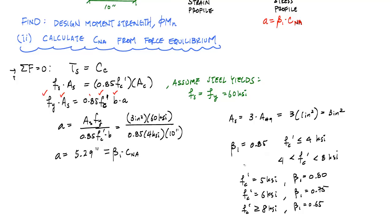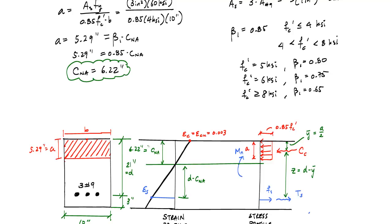Here in this case, beta one is 0.85 because I have 4 KSI concrete. A lot of times people get confused with this 0.85 up here. They think this is beta one and that's not. This number doesn't change if you're using the Whitney stress block or the equivalent stress block. And that makes CNA equal to 6.22 inches. And that's my neutral axis location. The next thing that we want to do once we have this is we have to verify that this assumption that we made here.